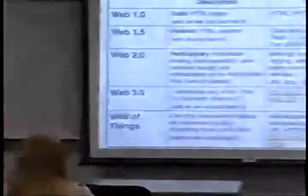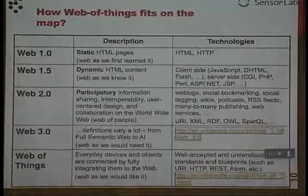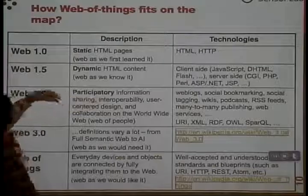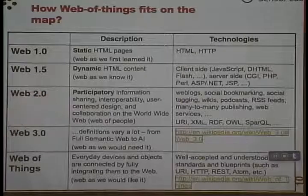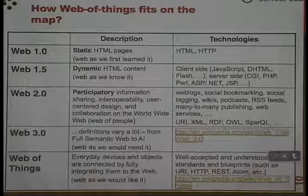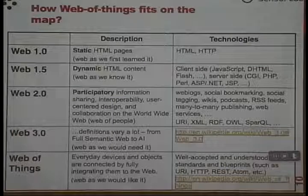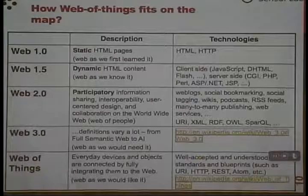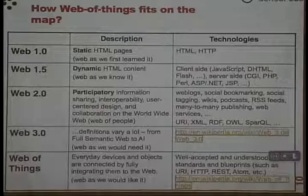To give you a map of different things you've learnt in class and where the Internet of Things fits in — you've actually learnt HTML, server-side programming, client-side programming. There are different categories: static pages, JavaScript, server-side scripting. There's also social media, where people actively generate content — that's Web 2.0. Semantic Web is Web 3.0, and the Internet of Things is above that, fitting into the overall landscape as the next thing in the vision of the Web.